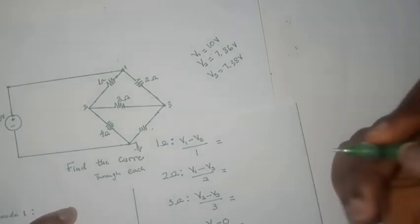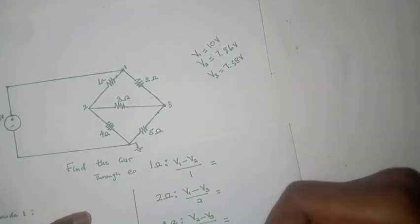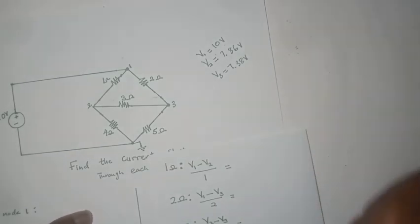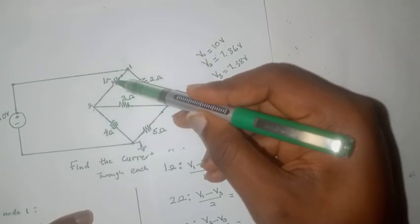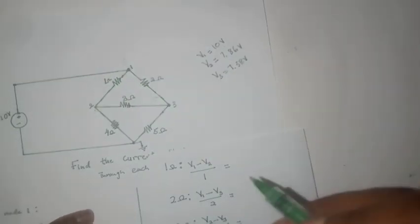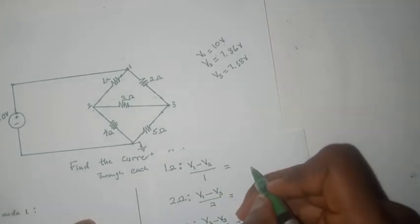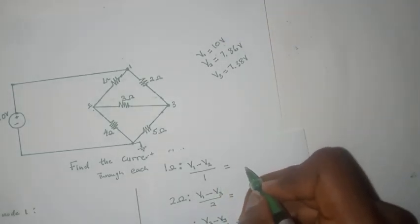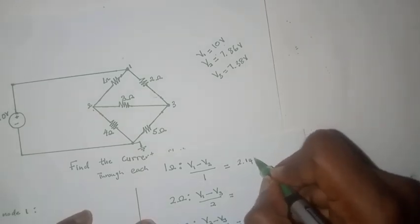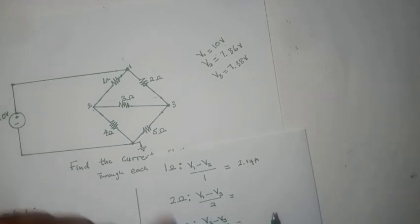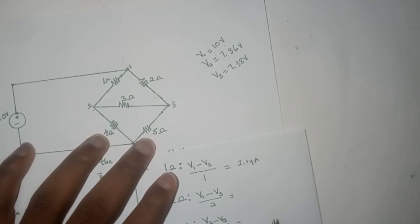The next thing to do would be to actually calculate the current flowing through each resistor. To calculate the current flowing through the 1-ohm resistor, that would be V1 minus V2 divided by 1 ohm, which is 10 minus 7.86 divided by 1, which would give us 2.14 amperes.